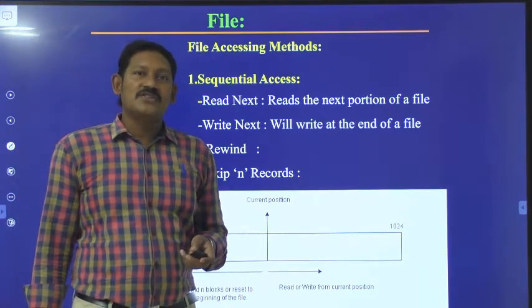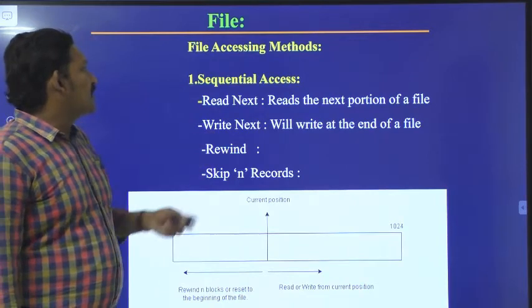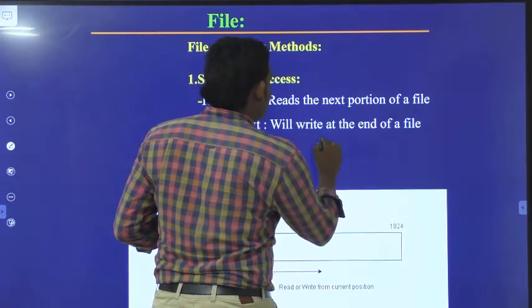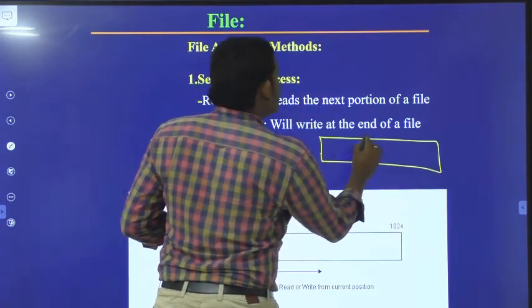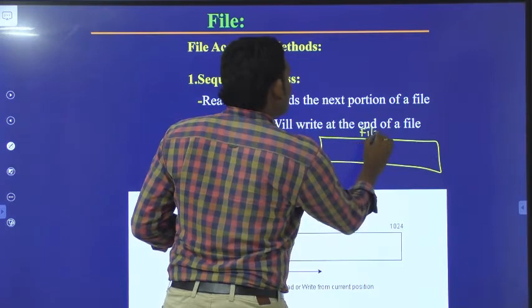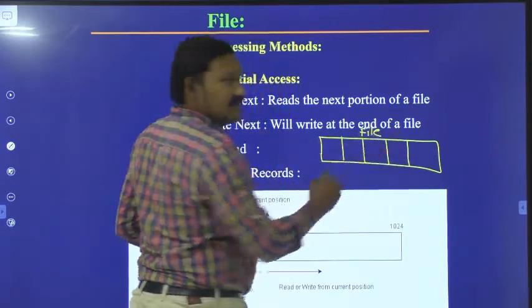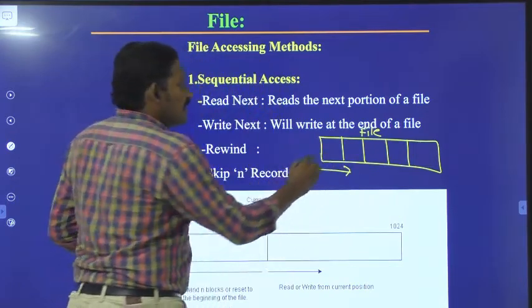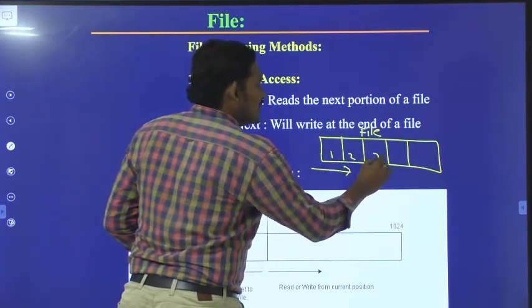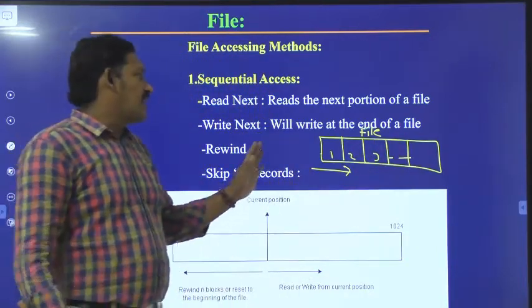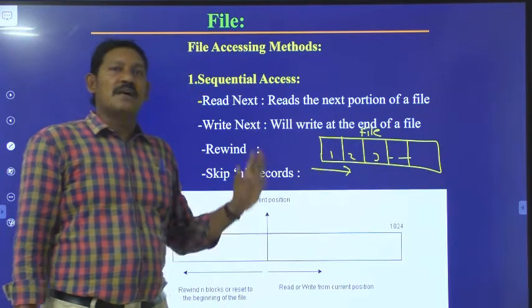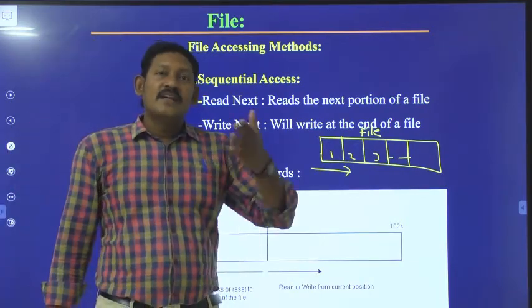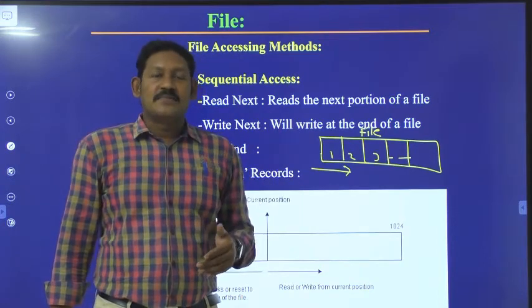Coming to the first one, it is nothing but sequential accessing. What do you mean by sequential accessing? Let us suppose if this is a file — the process of accessing the records sequentially one after the other, first this one, next to this, next to this. The process of accessing the records sequentially one after the other is simply termed as sequential accessing.